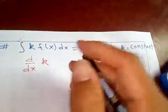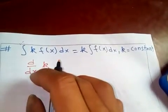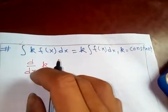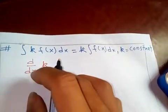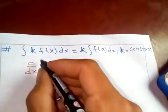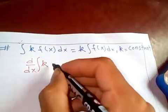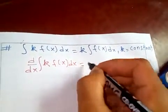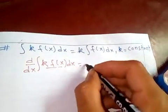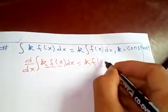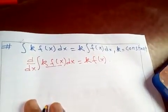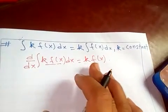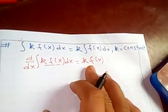From property 1, we know that the differentiation of the integral of k*f(x)dx gives back k*f(x) itself. We know this property.